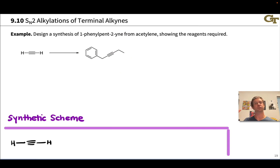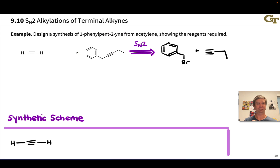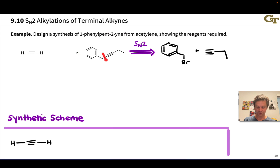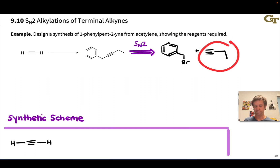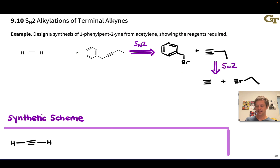We want to install each alkyl group one at a time. It doesn't really matter which alkyl group you install last. Benzyl bromide made more sense to install last because it's likely the more reactive alkyl halide in SN2 than ethyl bromide, although that's rather debatable. In any event, thinking backwards, I started by breaking the bond to benzyl bromide, taking it back to benzyl bromide and a terminal alkyne. We can further simplify that terminal alkyne back to acetylene by disconnecting the other bond, giving us ethyl bromide as the electrophile and acetylene as the starting material.